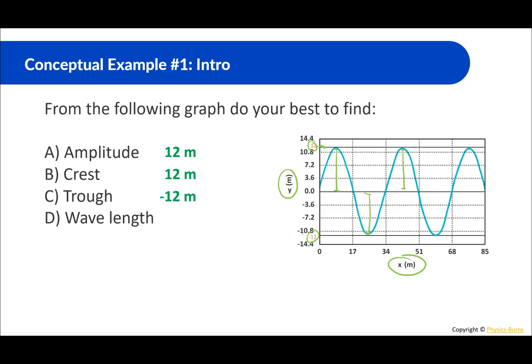And the wavelength. So wavelength is from here to here. Or we could start if we're starting from here both the full cycle to over here. So that's going to be easier to read. That's going to be 34 meters.